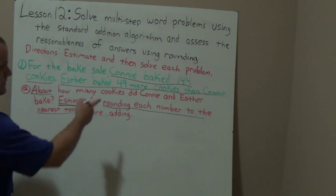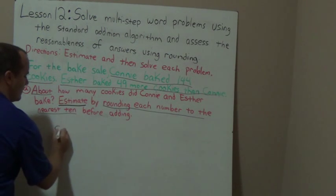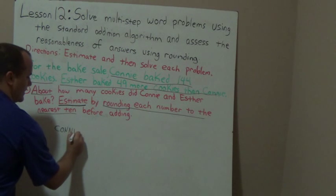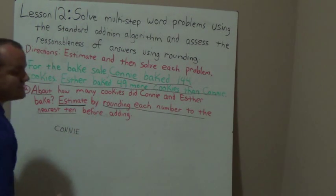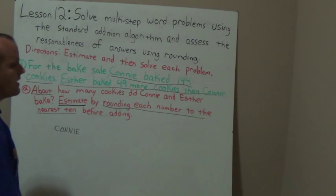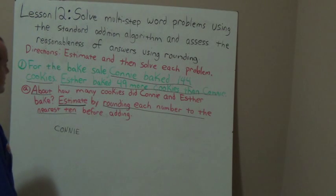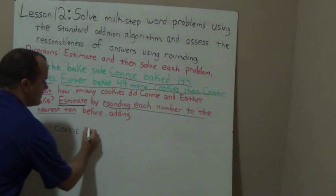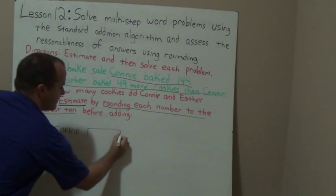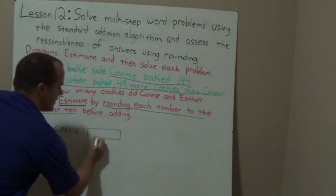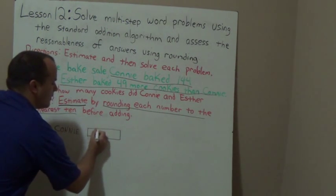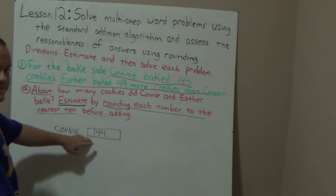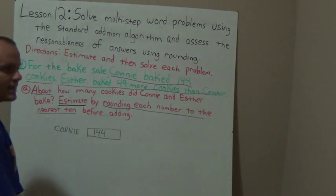So the first thing I'm going to do is take a look at Connie. I'm going to write her name right here — Connie — and create a tape diagram for Connie. Does it tell me how many cookies she baked? Yes, it says she baked 144 cookies. So let me draw my piece of tape, and on my piece of tape I'm going to write 144. That stands for the exact number that Connie baked.